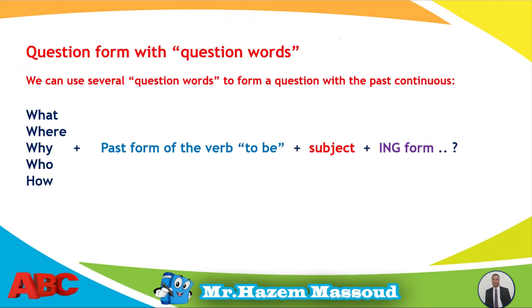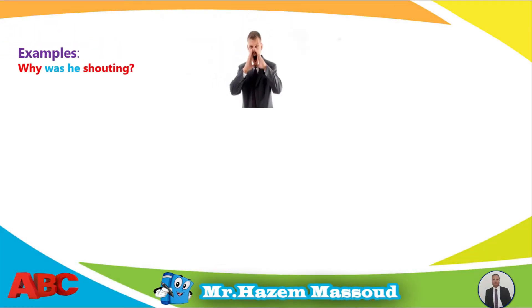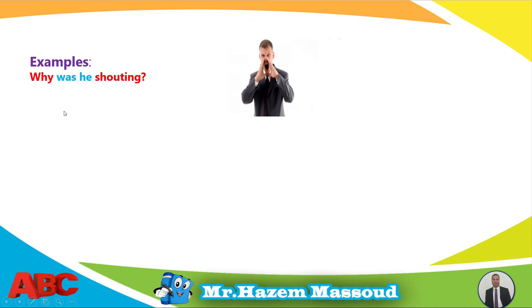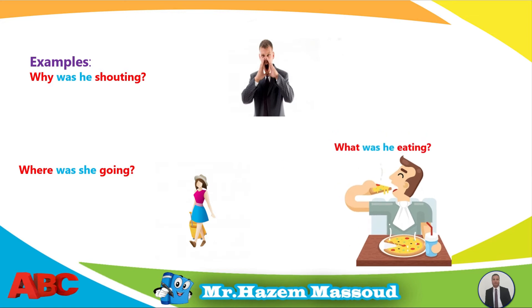Another form uses question words. We can use several question words to form a question with the past continuous. For example, these are WH question words: what, where, why, who, how. So I start the sentence with a WH question word plus the past form of verb 'to be' plus subject plus -ing form. For example: Why was he shouting? Where was she going? What was he eating?